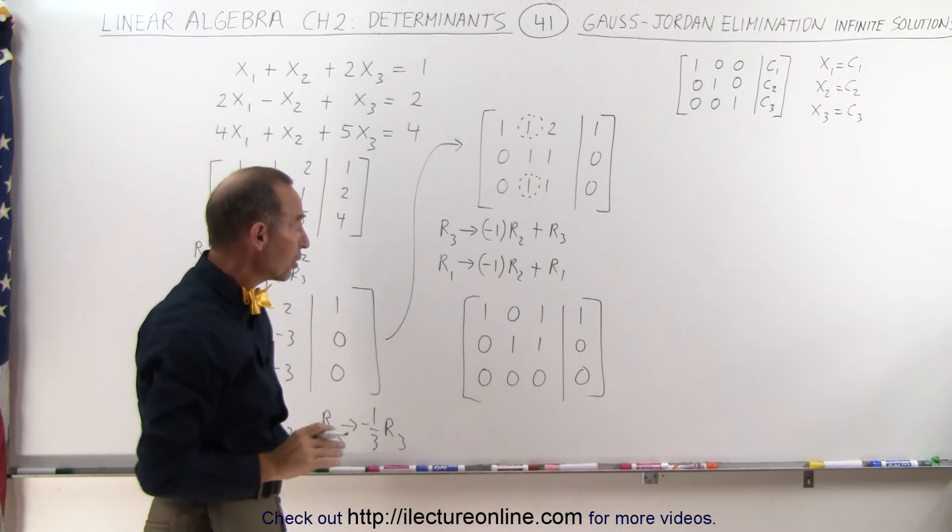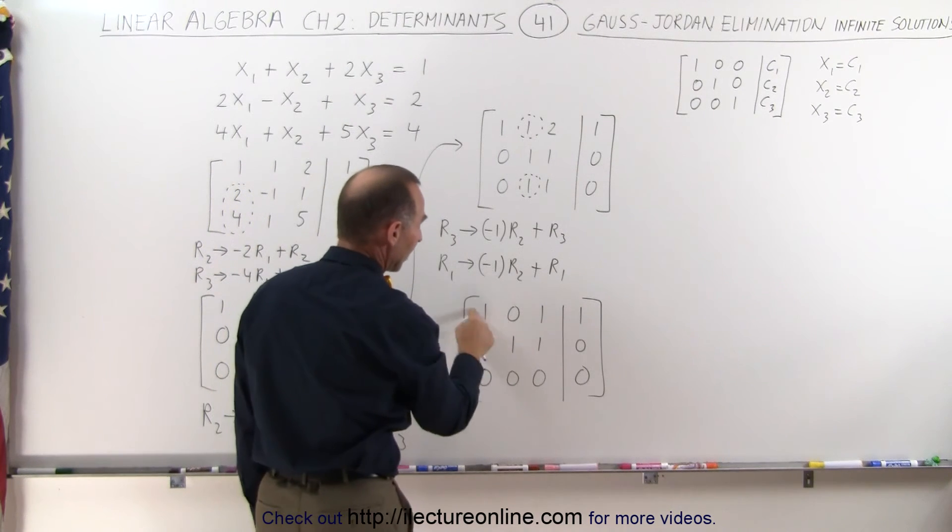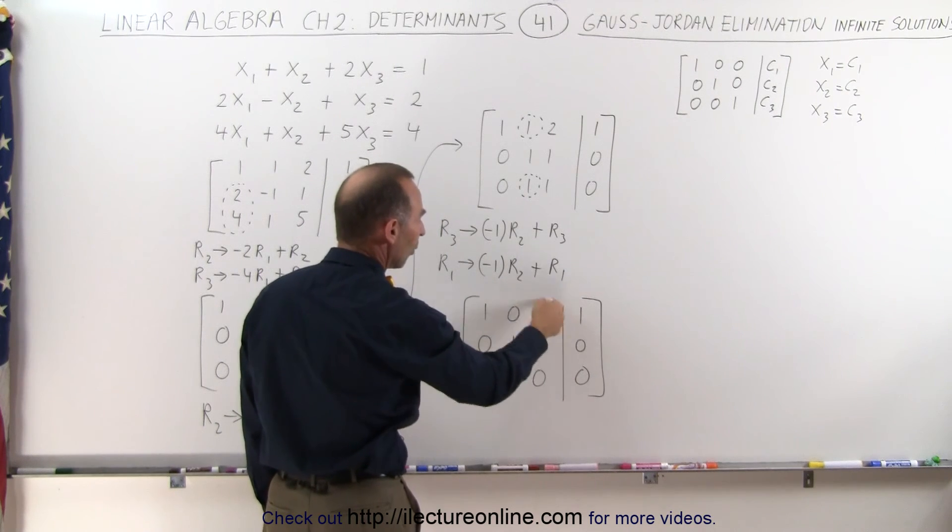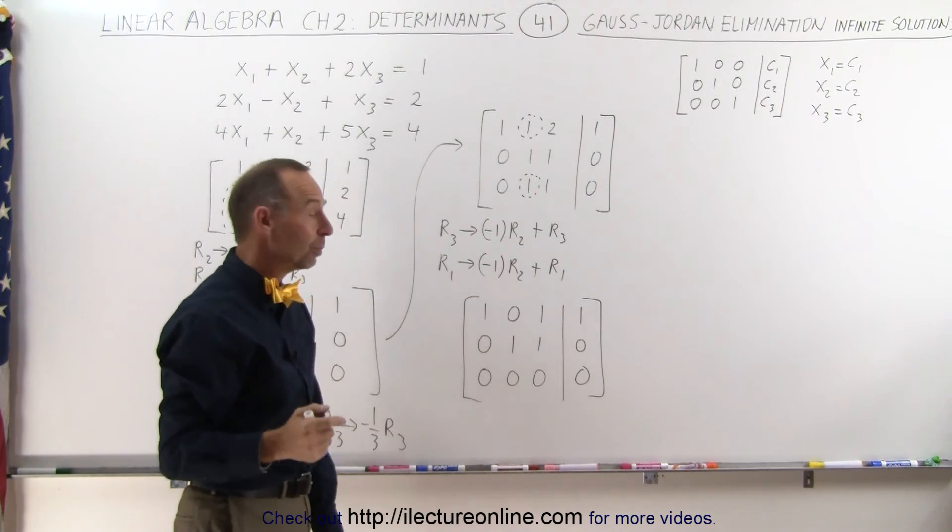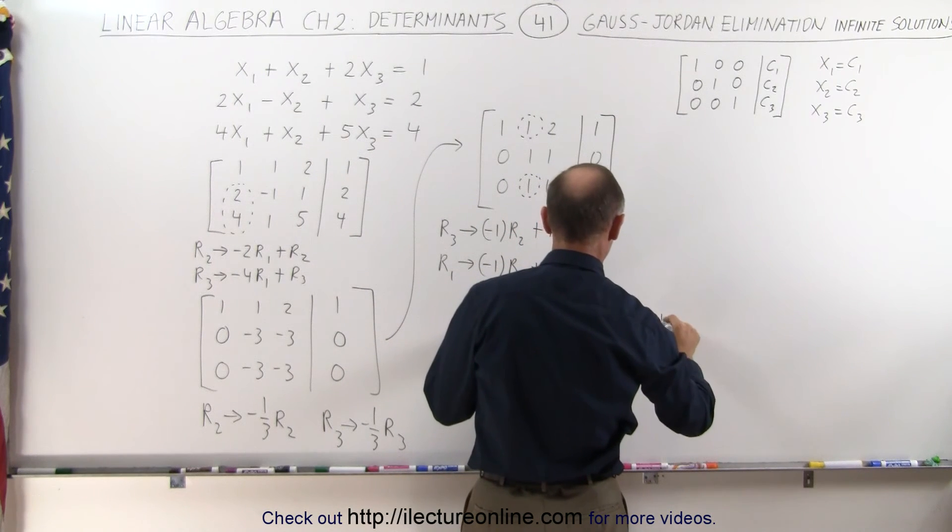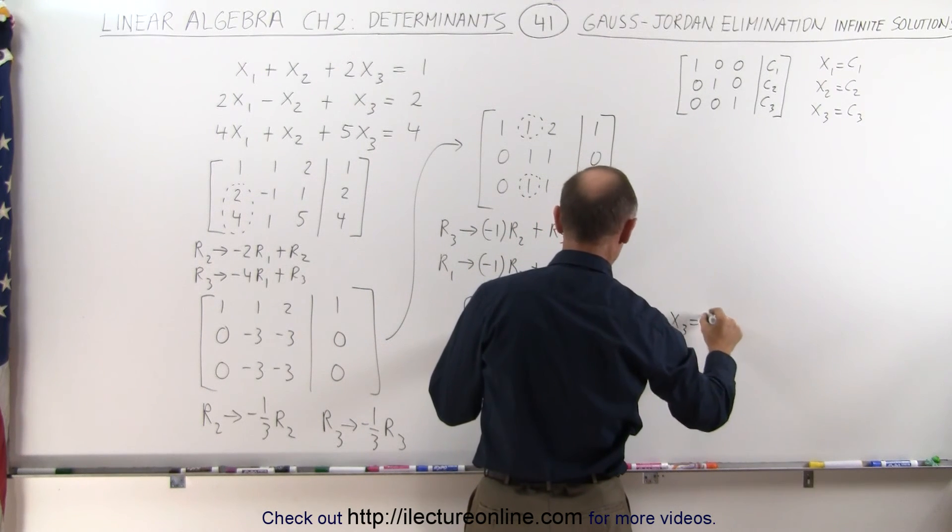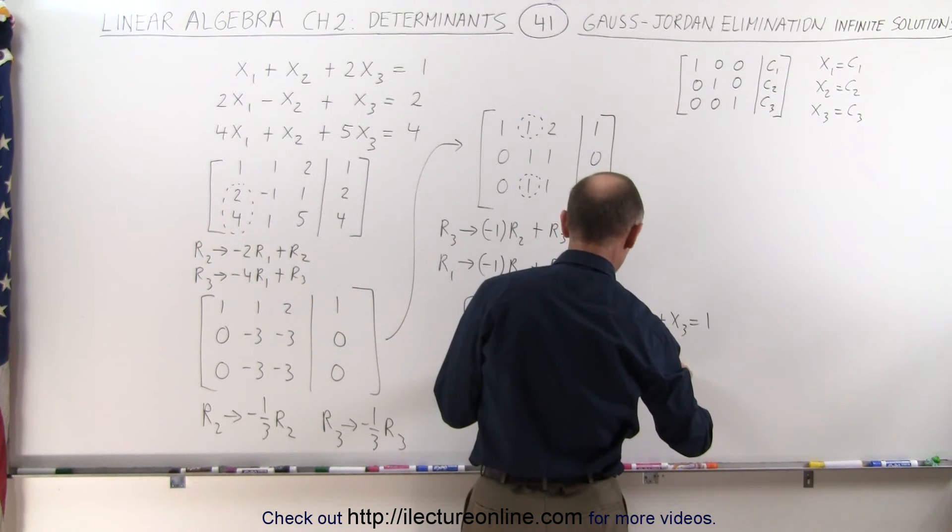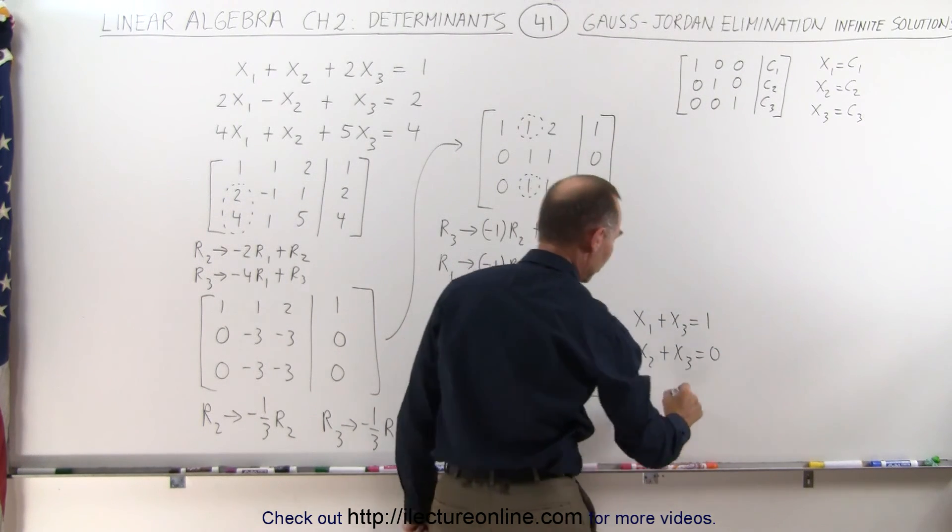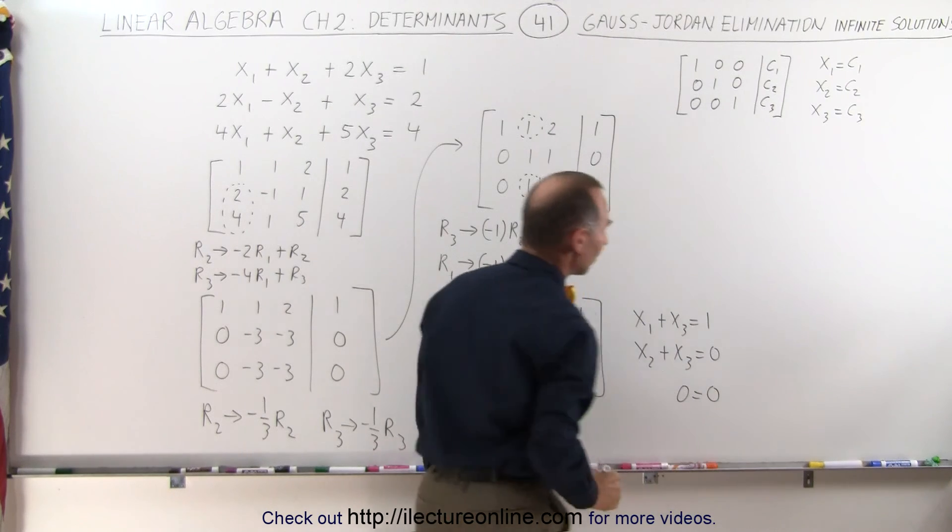Notice that it's as far as we can go. We have 1's across the diagonal here, but we don't have a 1 there, so we cannot get rid of this 1 over here. Ultimately, what this is telling us is that x1 plus x3 is equal to 1, and x2 plus x3 is equal to 0, and of course, we have 0 equals 0, which doesn't give us any information.